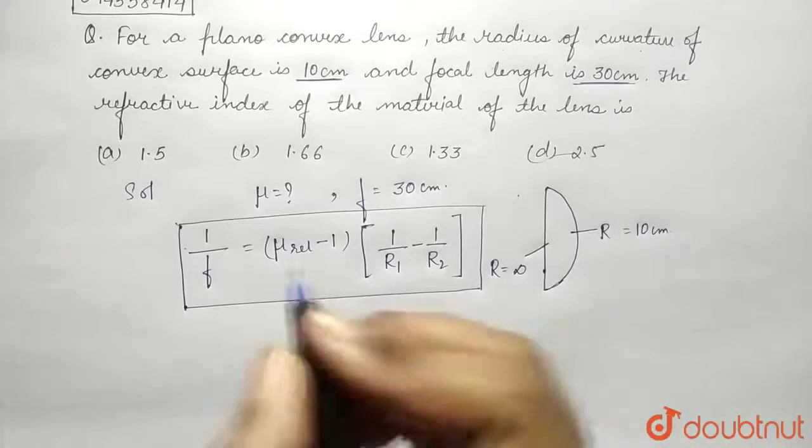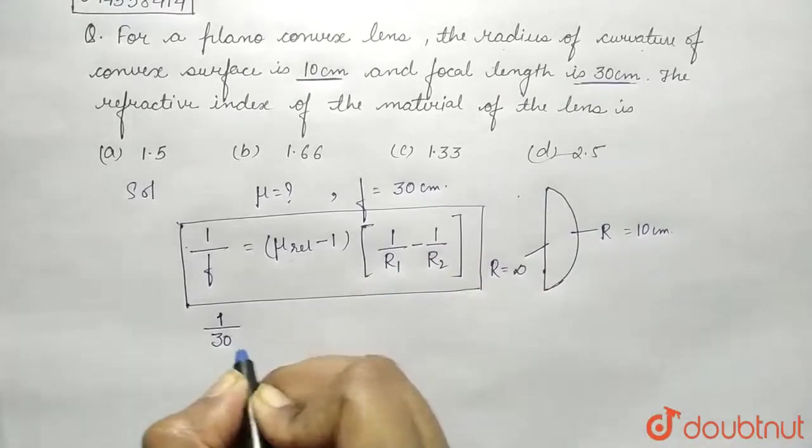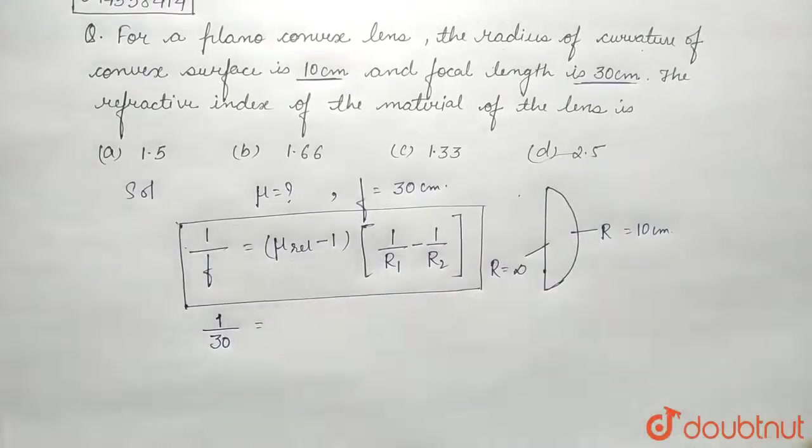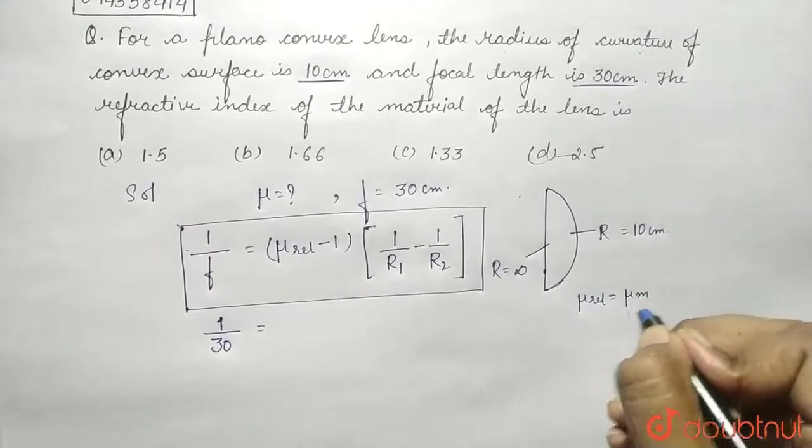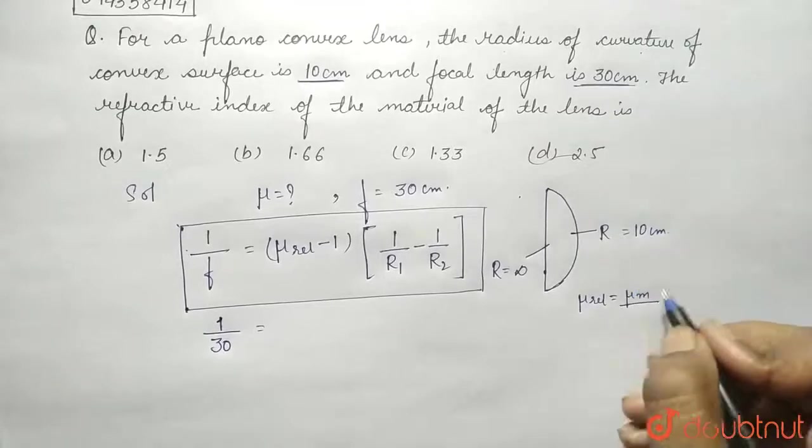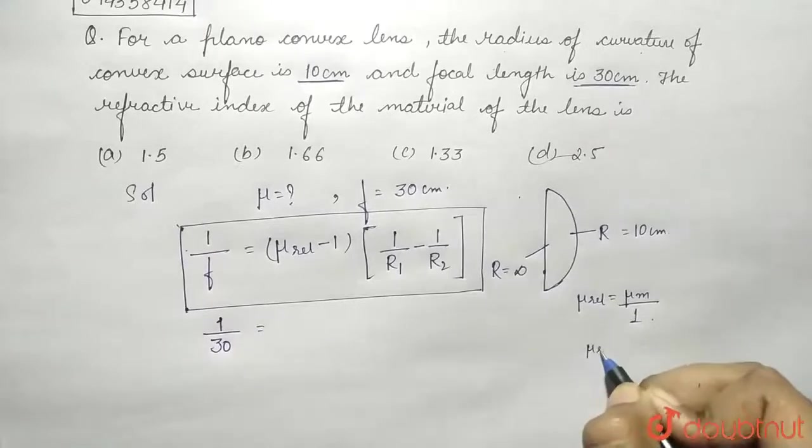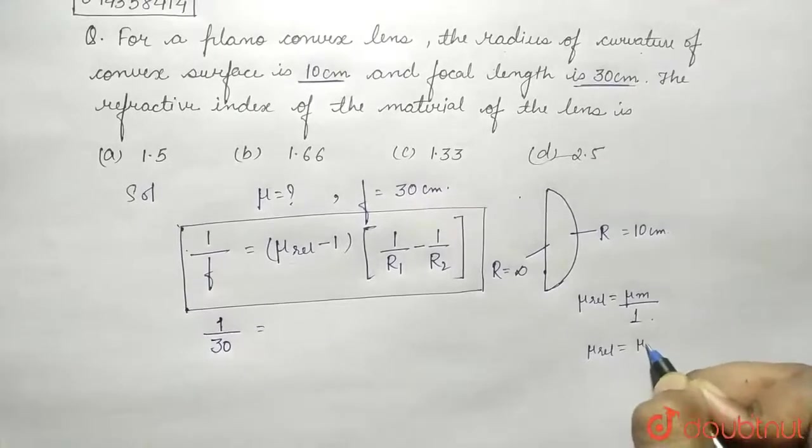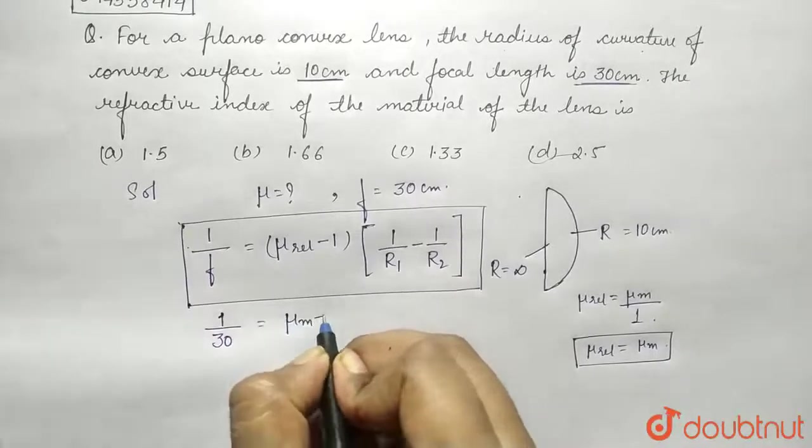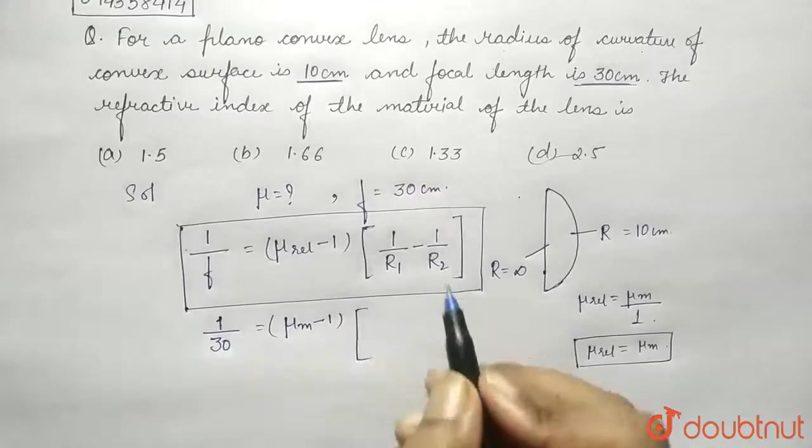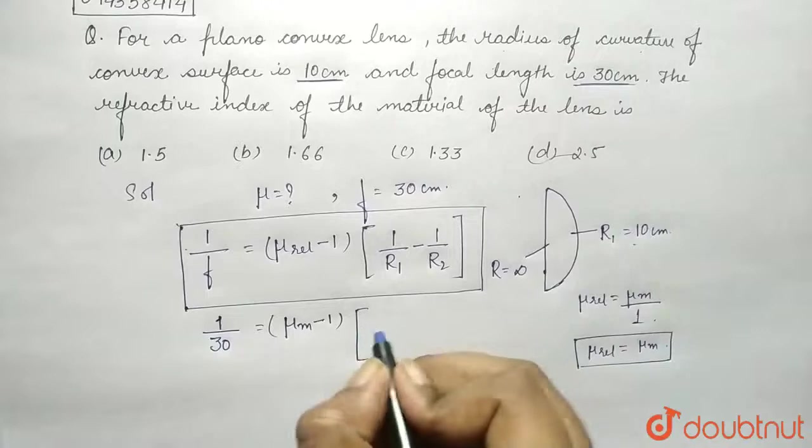Now we will put the value. So f is 30, μ_relative equals to μ_medium upon μ_air. So we get μ_relative equals to μ_medium. We can write it as (μ_medium - 1) into 1 upon r1. r1 is 10 centimeter, so one upon 10 minus